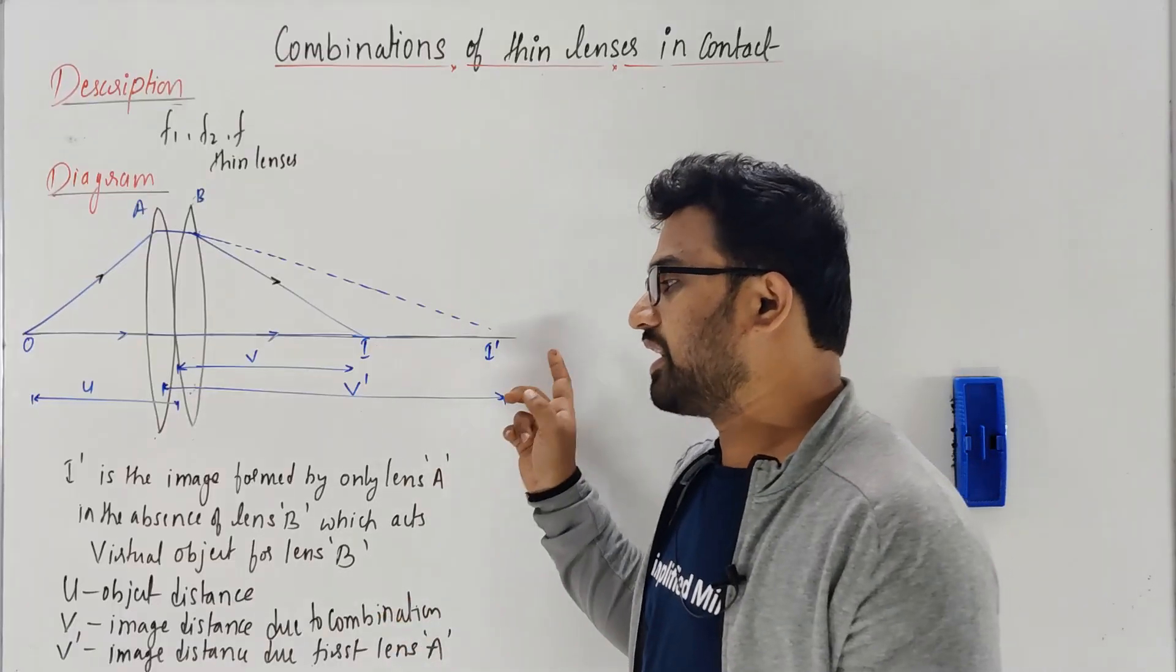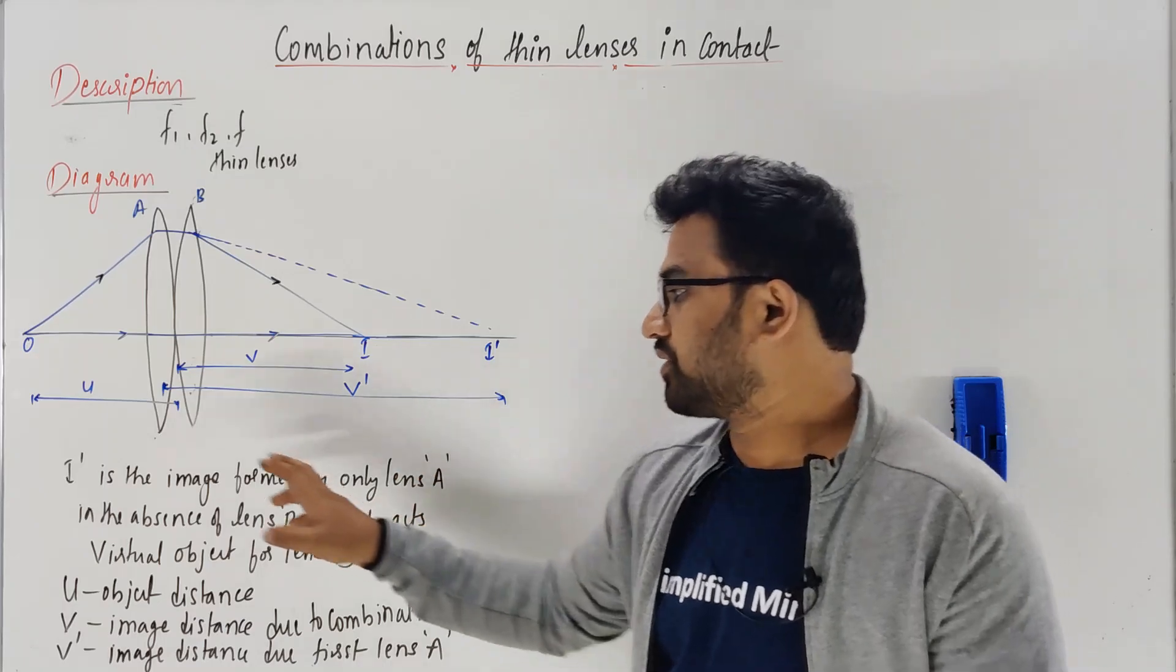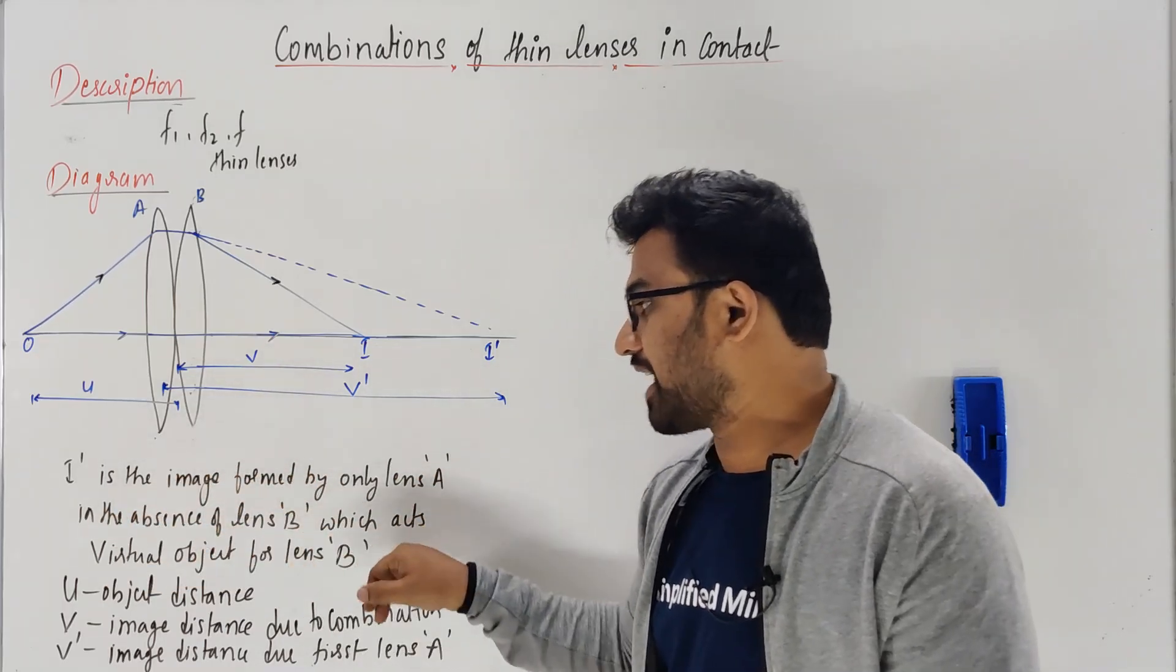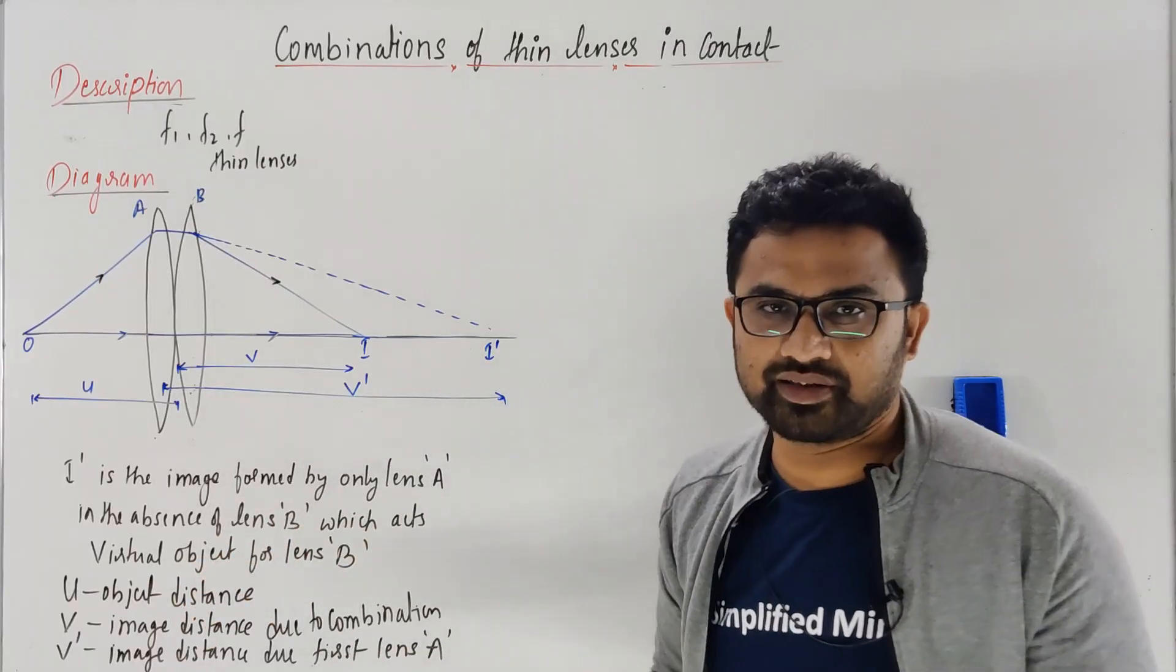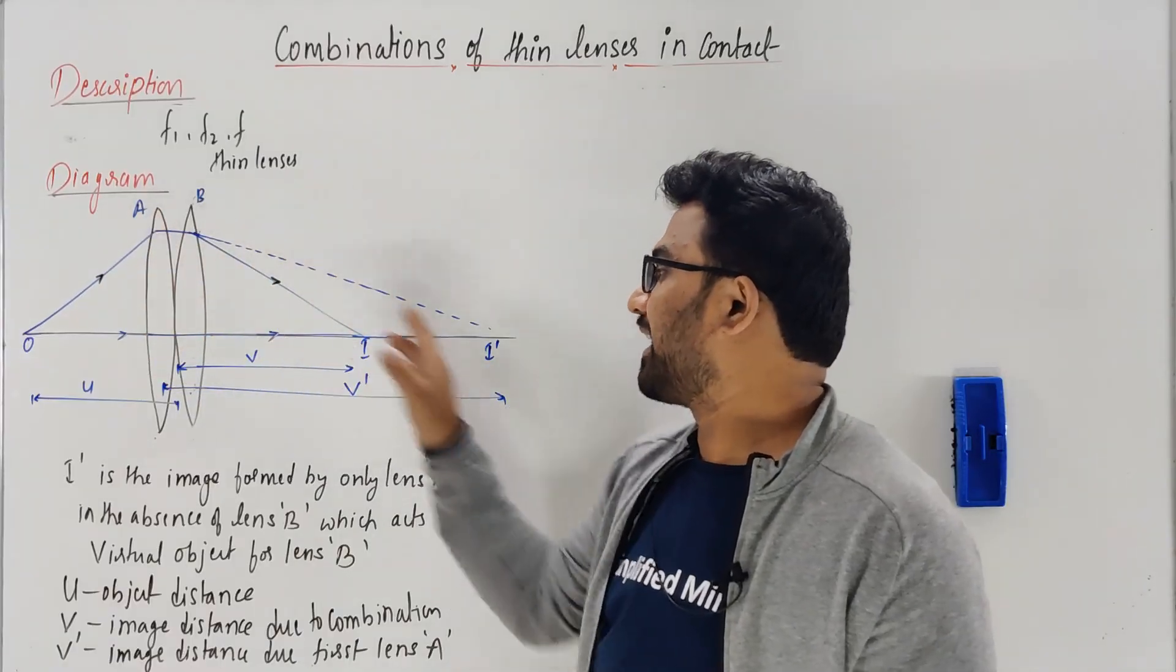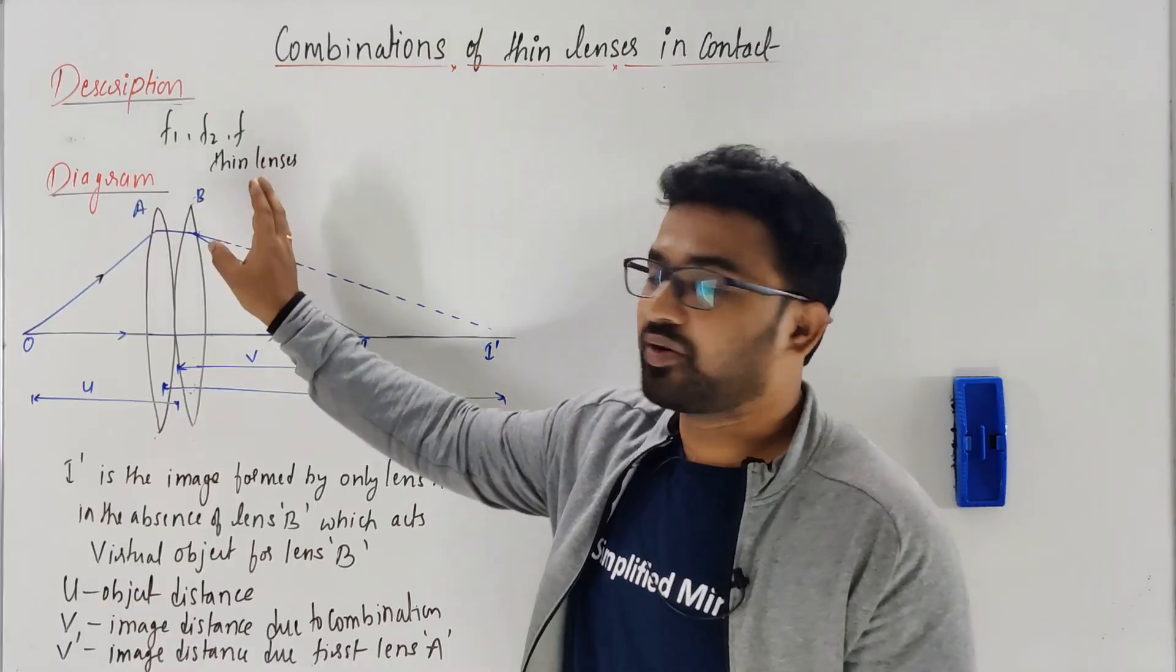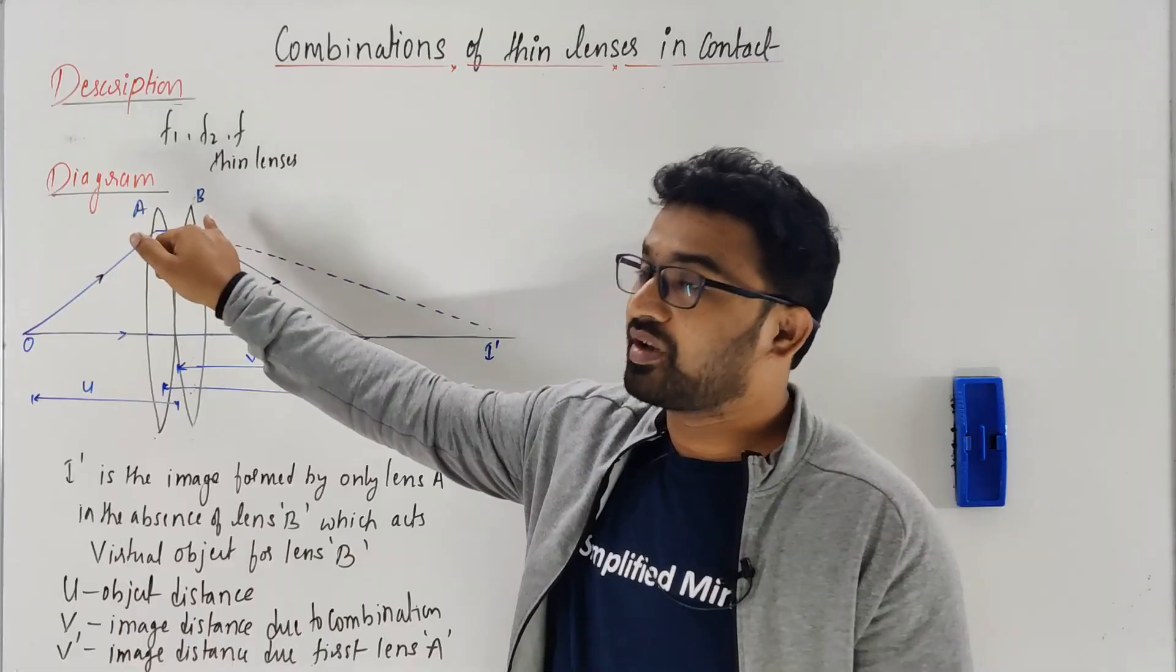Please write this sentence: I' is the image formed by only lens A in the absence of lens B, which acts as the virtual object for lens B. Now continue with the derivation. First lens A forms the image at I', then lens B.